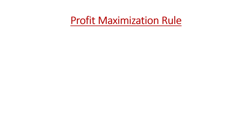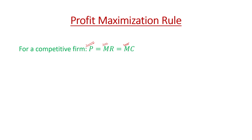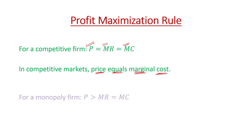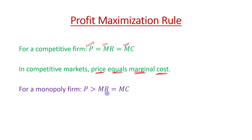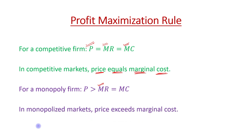Now we have the profit maximization rule. In the competitive firm case, the profit maximization rule is that marginal revenue equals marginal cost, and price is also equal to marginal cost — in a competitive market, price equals marginal cost. Whereas in the case of a monopoly firm, marginal revenue is equal to marginal cost, but price is greater than marginal cost. So in monopolized markets, price exceeds marginal cost.